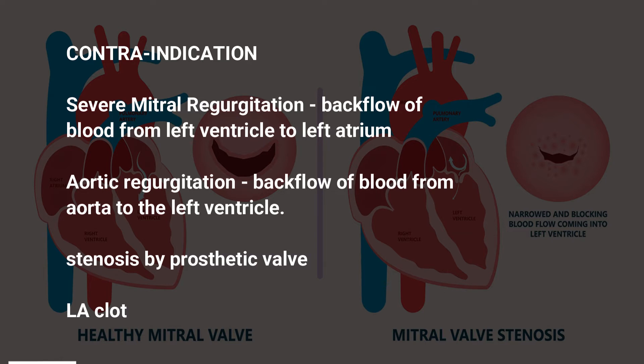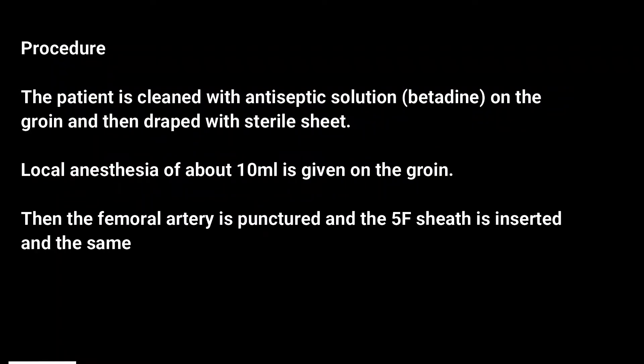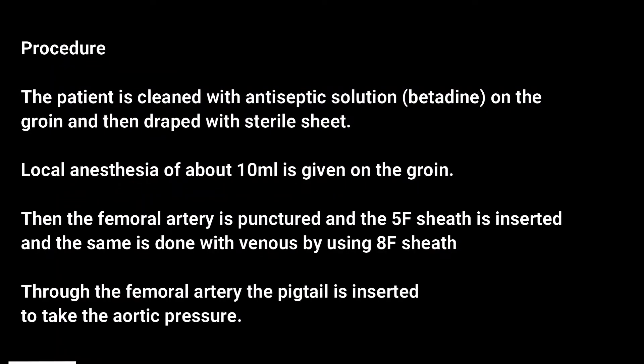Contraindications include severe mitral regurgitation — backflow of blood from the left ventricle to the left atrium — and aortic regurgitation — backflow of blood from the aorta to the left ventricle — as well as stenosis by prosthetic valve and left atrial clot. The procedure begins with the patient being cleaned with antiseptic solution (betadine) on the groin and then draped with a sterile sheet.